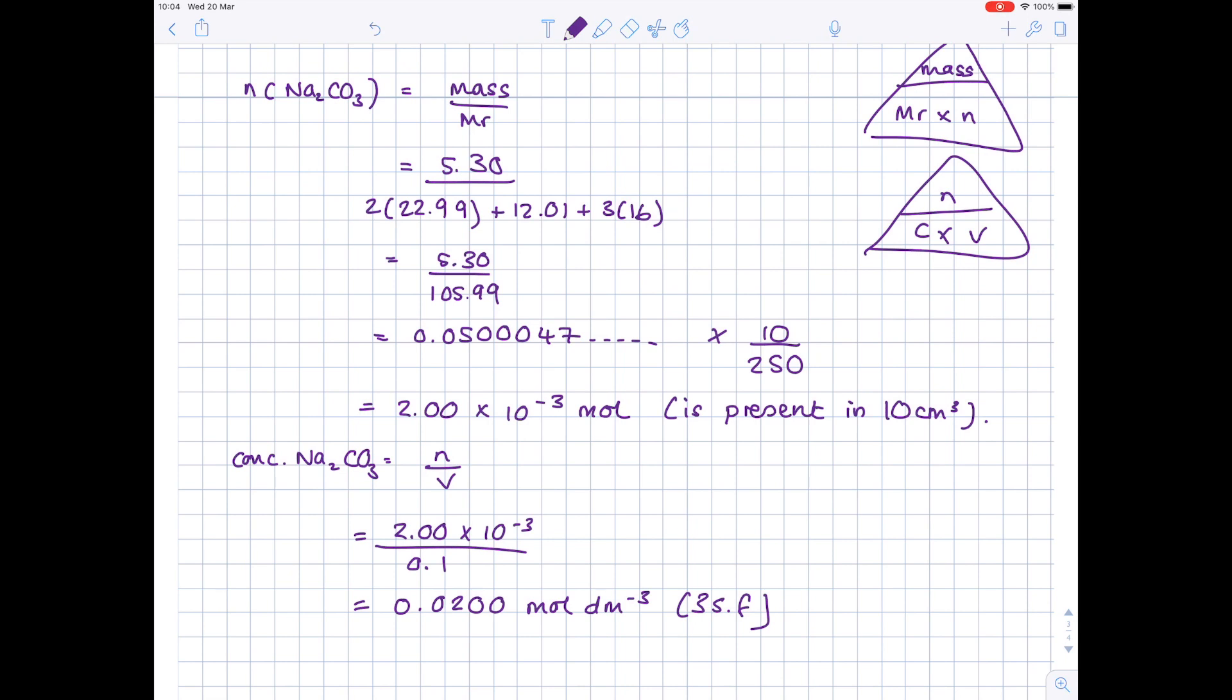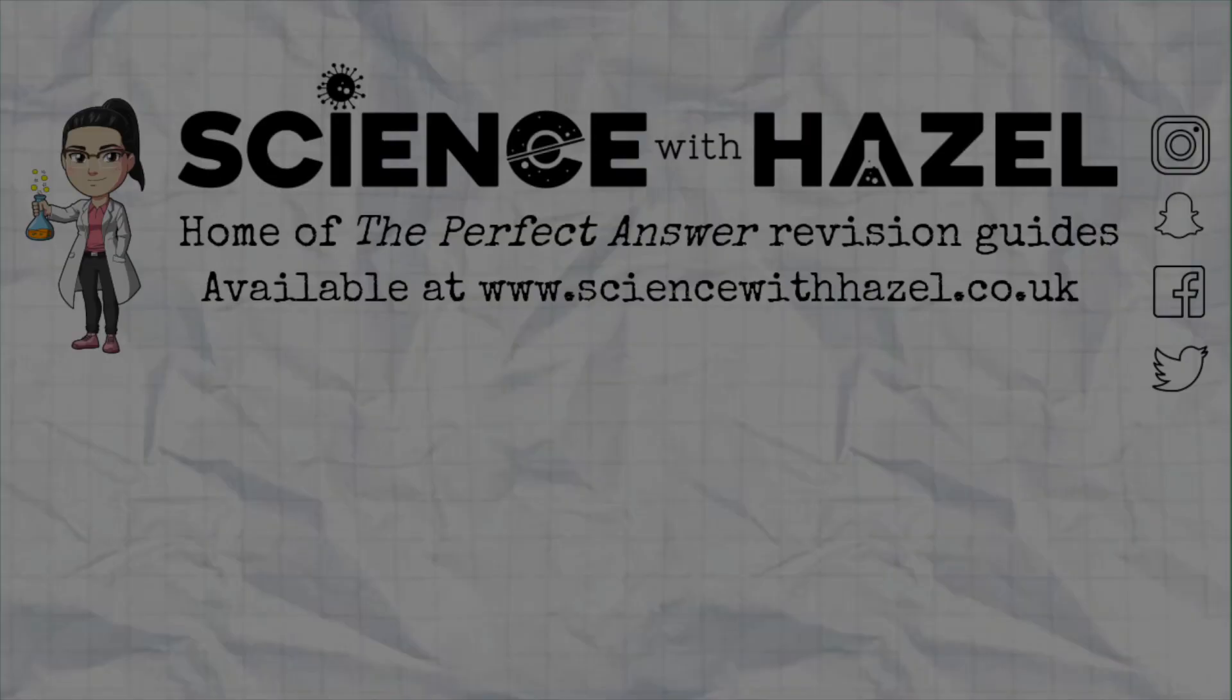One thing I probably should point out is when you're actually writing up, really, to point out that you're working out the concentration of sodium carbonate, you use square brackets to represent concentration. So that's actually a much nicer way of writing it. Anyway, that's everything I wanted to do on this video. I hope you found it helpful. Don't forget to sub and like if you want to see more similar videos. And I'll be back soon.